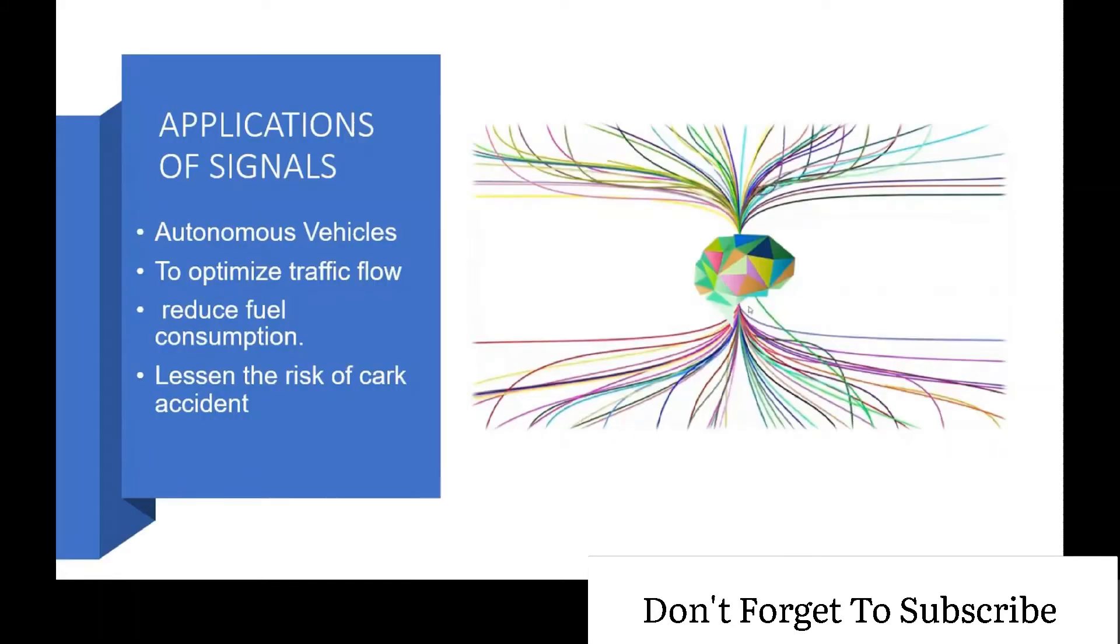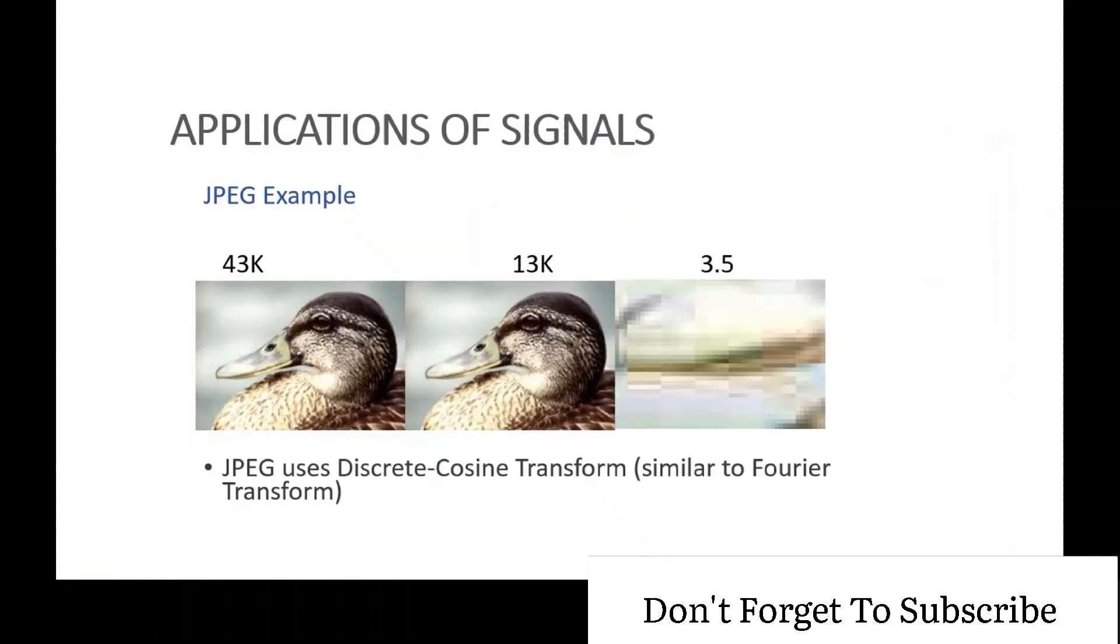If you talk about image processing, this is the most important application of signals. Basically, image processing is a method to perform some operations on an image in order to get an enhanced image or to extract some useful information from it. It is a type of signal processing in which input is an image and output may be an image or characteristics or features associated with that image. This is just because of signal that we are able to get our blurred images in a clear way.